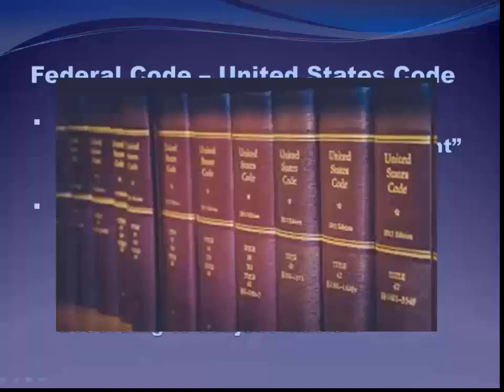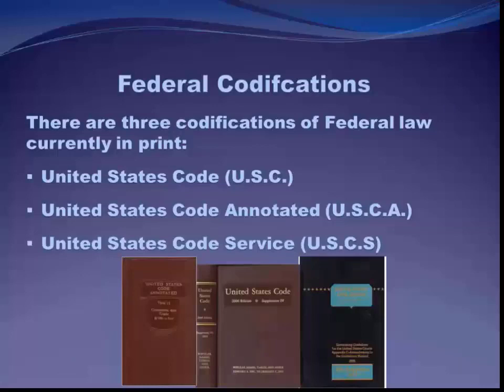The official United States Code is put out by the government, and then there are unofficial versions published by commercial publishers. While session laws contain the official text of legislative enactments, they are limited as research tools. Researchers need the laws currently enforced rather than the laws as passed by a specific legislative term, and they need convenient access to amendments and related legislation. Codes collect the current statutes of general and permanent application, arranged by subject.